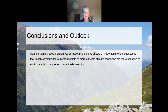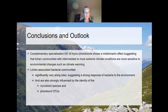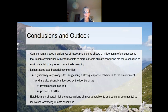To conclude: complementary specialization H2' of micro- and photobionts shows a mid-domain effect, suggesting that lichen communities with intermediate to more extreme climate conditions are more sensitive to environmental changes such as climate warming. Lichen-associated bacterial communities significantly vary along the elevation gradient, suggesting a strong response of bacteria to the environment, and are also strongly influenced by the identity of the mycobiont species and photobiont OTUs. Finally, we want to establish certain lichens as bioindicators for varying climate conditions, including the associations of micro- and photobionts and bacterial communities.